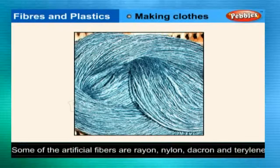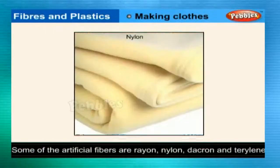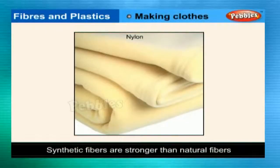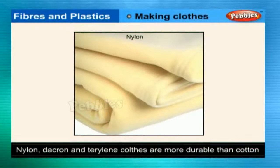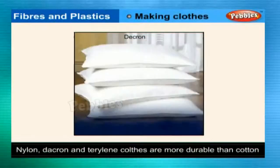Scientists have developed many kinds of artificial fibres like rayon, nylon, dacron, and terylene. These are called synthetic fibres. Synthetic fibres are stronger than natural fibres, so nylon, dacron, and terylene clothes are more durable than cotton clothes.